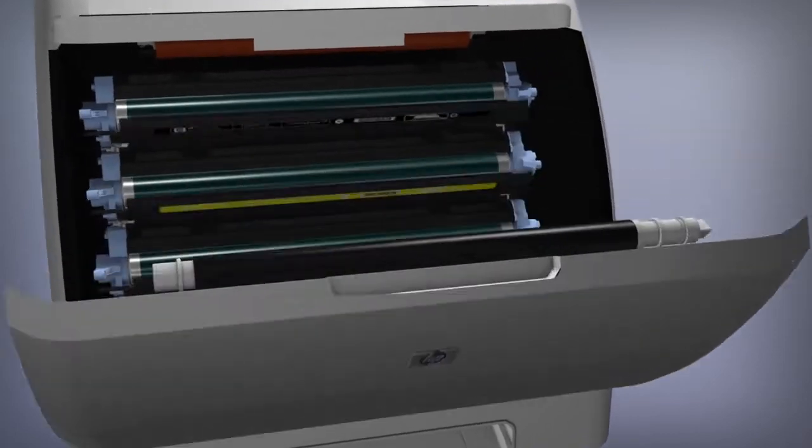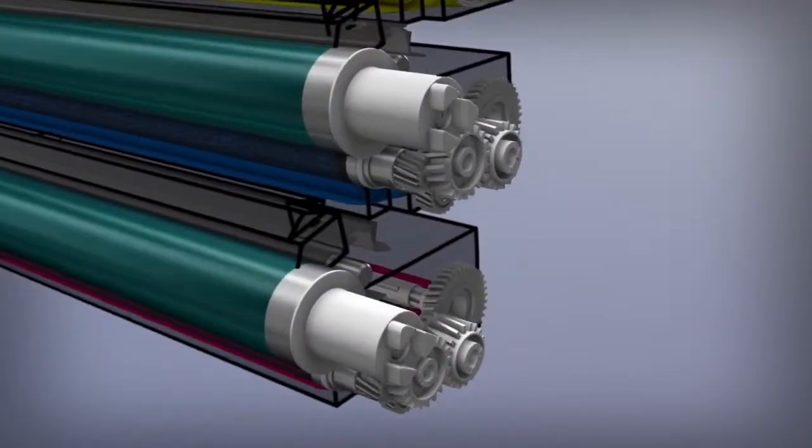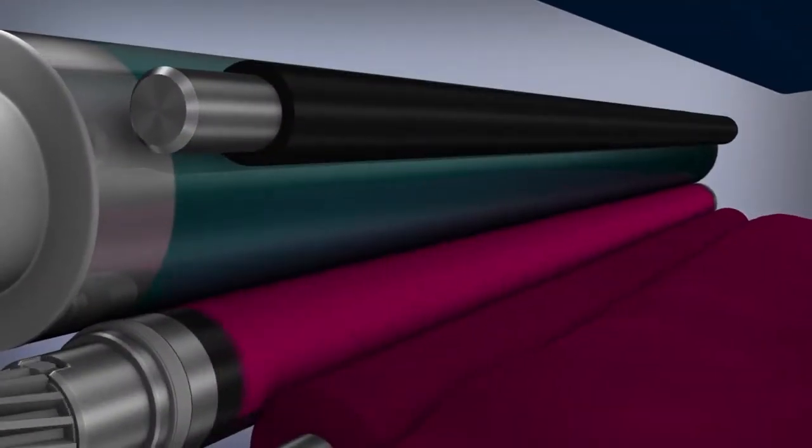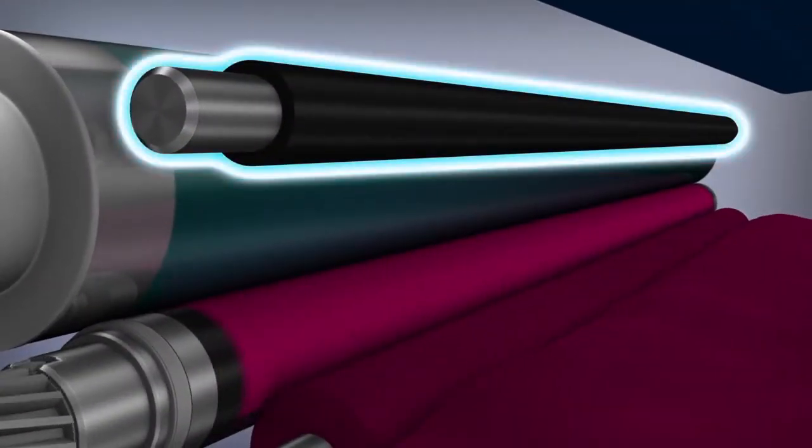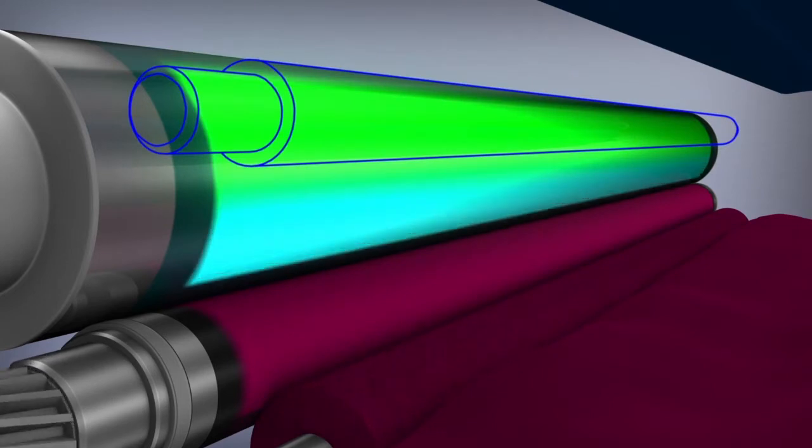To fully understand how technically complex color printing is, take a look at the electrophotographic process. The primary charge roller, or PCR, rotates next to the OPC drum and applies a negative charge to the surface of the OPC drum.